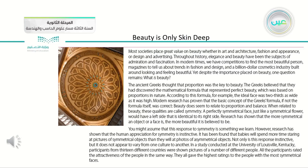The ancient Greeks thought that proportion was the key to beauty. They believed they had discovered the mathematical formula representing perfect beauty, which was based on proportions in nature. According to this formula, the ideal face was two-thirds as wide as it was high. Modern research has proven that the basic concept of the Greeks' formula was correct. Beauty does seem to relate to proportion and balance. When related to beauty, these qualities are called symmetry. A perfectly symmetrical face, just like a symmetrical flower, would have a left side identical to its right side.